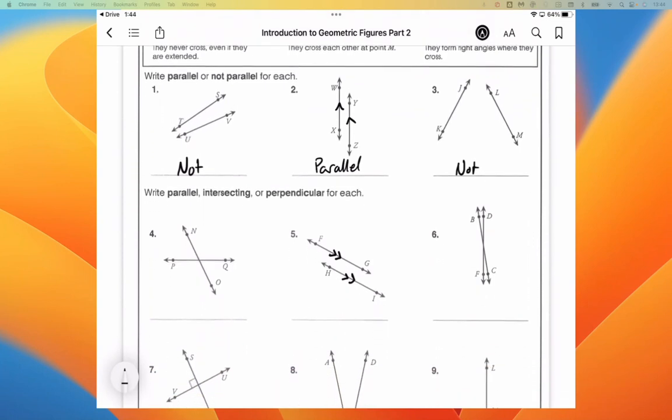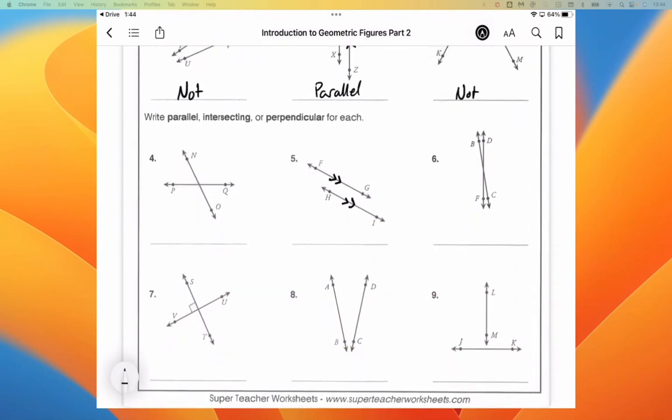Parallel, intersecting, or perpendicular for the next set here. So we have intersecting, we have parallel, and we have intersecting again.